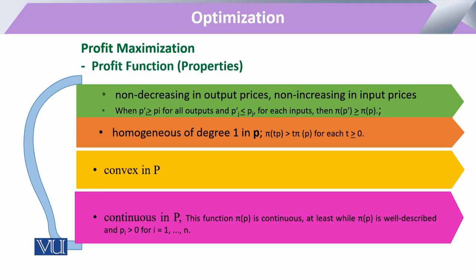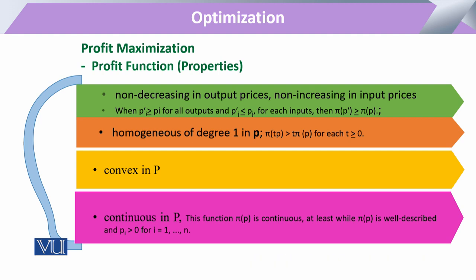Keeping in view the behavior of firms, the most important property is that for output prices, the profit function will always be positively sloped, and for input prices, it will always be non-increasing, showing an inverse relationship.